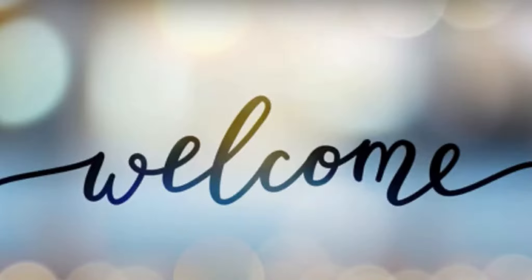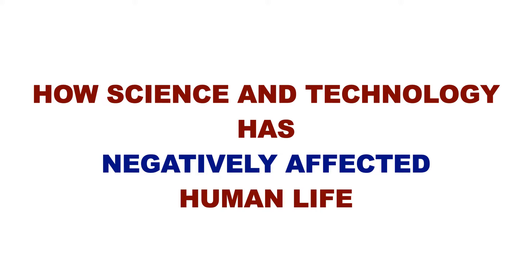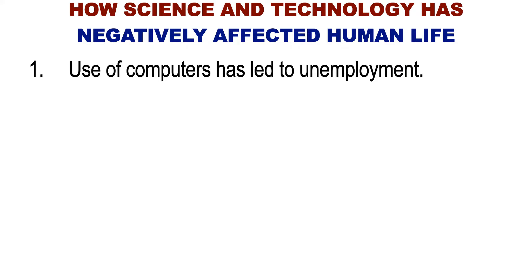Welcome. Today we are looking at how science and technology has negatively affected human life. Number one, the use of computers and machines has replaced human labor, therefore leading to unemployment. Science and technology has led to unemployment due to automation and use of robots to replace human labor.